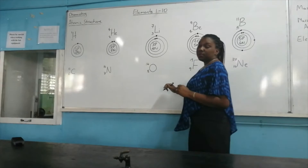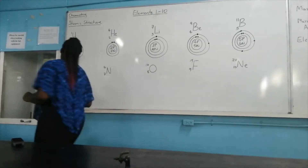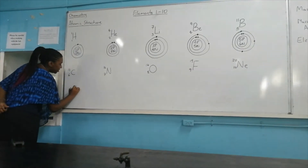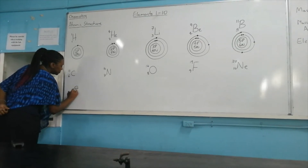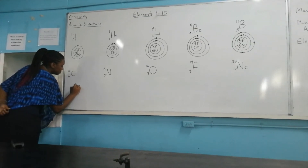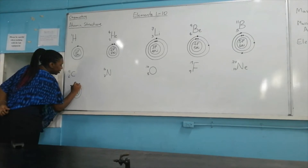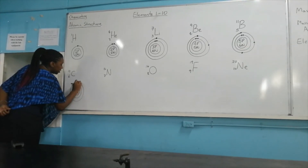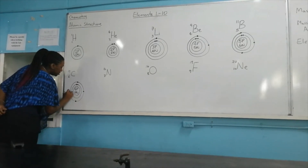Element number 6 is carbon. We have six protons and six neutrons. On shell number 1 we have two electrons, and on shell number 2 we have four electrons.